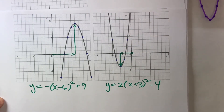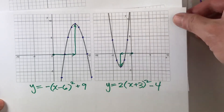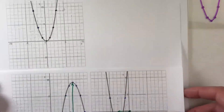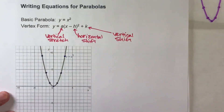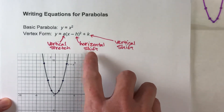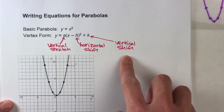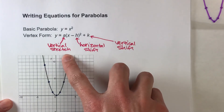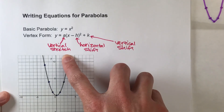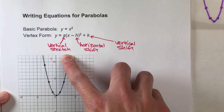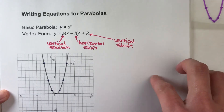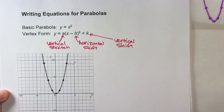Hopefully you're getting the hang of this. Remember, there are three basic things you're looking for in order to write that equation: how much is it shifted horizontally, how much is it shifted vertically, and is there a vertical stretch. Hopefully you found this video helpful. If you did, please hit that like button and subscribe because it really helps us out. Good luck on your math and I'll see you next time.